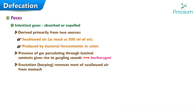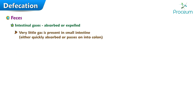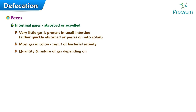Eructation, or burping, removes most of the swallowed air from the stomach, but some passes on into the intestine. Usually very little gas is present in the small intestine because the gas is either quickly absorbed or passes on into the colon. Most gas in the colon is a result of bacterial activity, with the quantity and nature of the gas depending on the type of food eaten and the characteristics of the colonic bacteria.